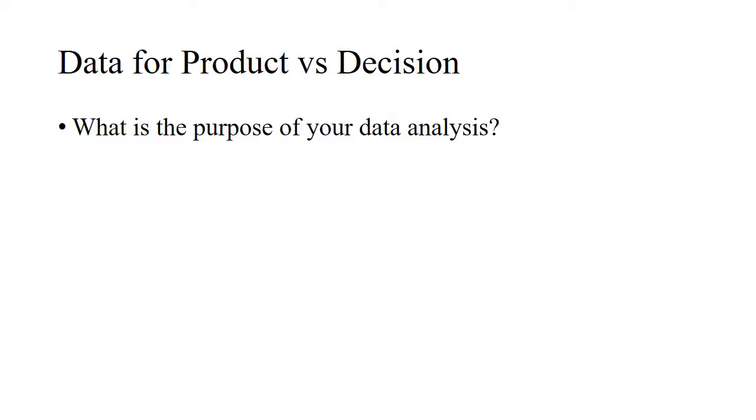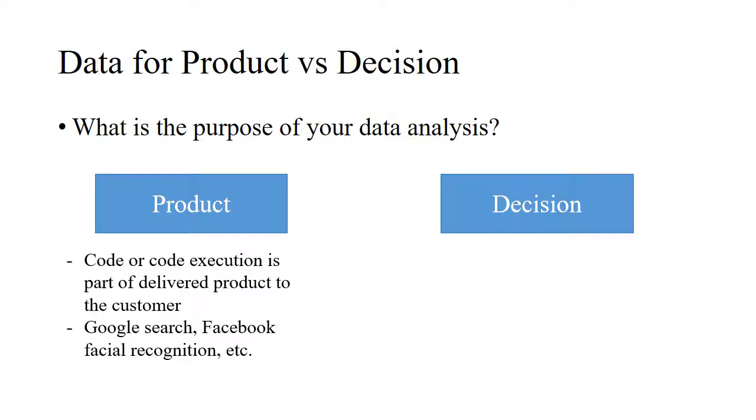The first thing that we need to do is to differentiate the purpose of our data. There's data that could be for a product or for a decision. If it's for a product, think of code or code execution that's part of something you deliver to the customer. Think of Google search or Facebook's facial recognition AI, and there are other things where the code is there to deliver directly to the customer.